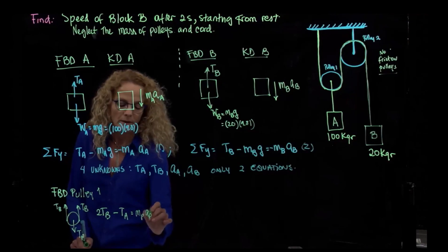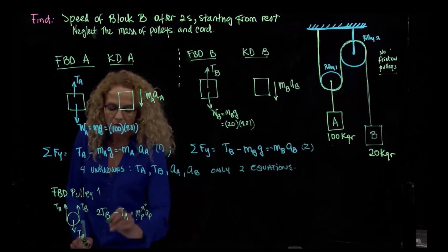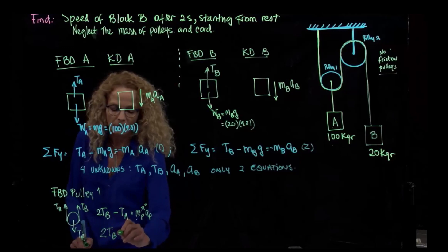But this is zero. Therefore, we can say that 2TB is equal to TA.